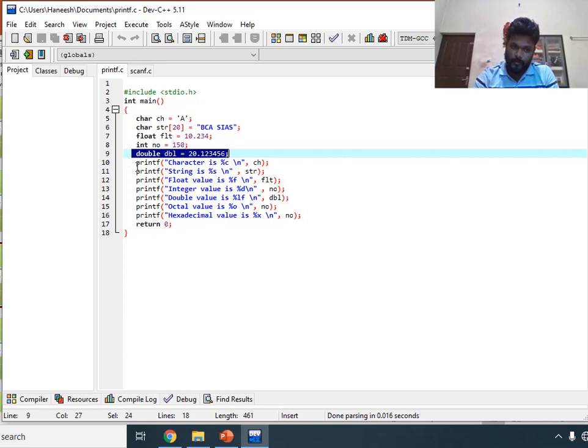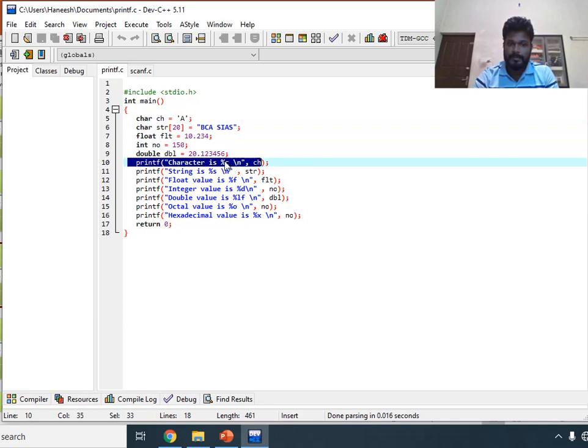Then we are going to display all these values. First, character ch - that is printf %c for displaying character value ch. Then second, string value BCA SIAS. String is %s for this string value.